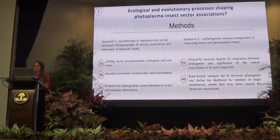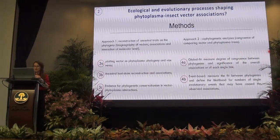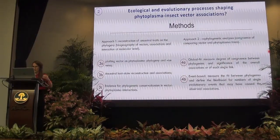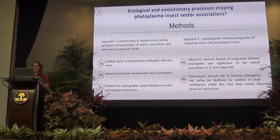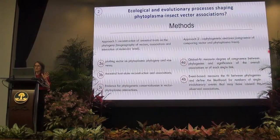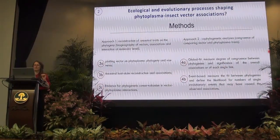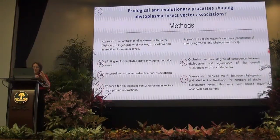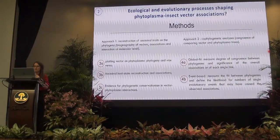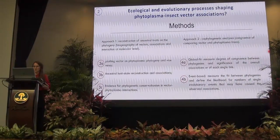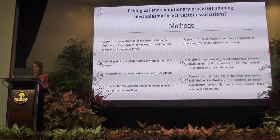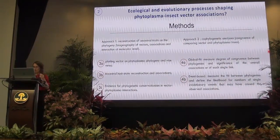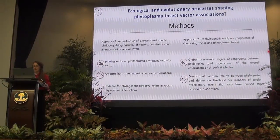To address these questions, I use two approaches. The first is reconstruction of ancestral traits — mapping the phylogeny of one associate onto the other — using ancestral host-state reconstruction, similar to ancestral area range reconstruction, along with protein-protein interaction studies that may provide evidence for phylogenetic conservatism. The second approach is co-phylogenetic analysis, which is more formal. There are two types of algorithms: global fit and event-based, and we will discuss both.